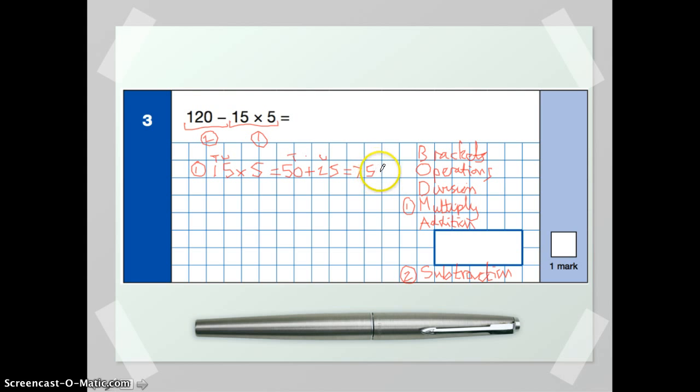Now, one thing which can be really helpful here is rewriting the expression, except putting the number you've worked out already. This helps you keep track of what you've calculated and what you haven't. If we rewrite the number sentence at the beginning now, we've still got 120. We've still got the subtraction. We've not dealt with that yet. But we know that 15 multiplied by 5 is 75. So we can just swap that out.